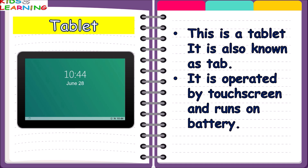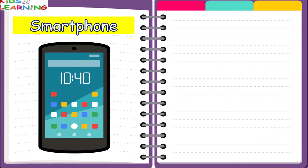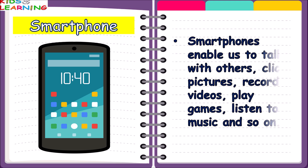Tablet — this is a tablet, also known as a tab. It is operated by a touch screen and runs on battery. It is a type of computer which is smaller than a laptop.